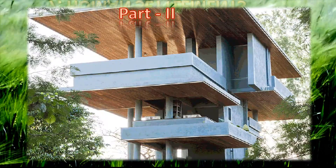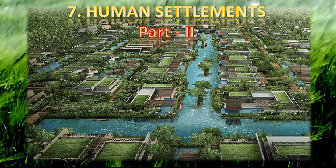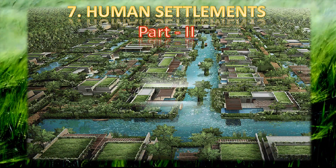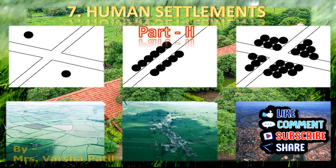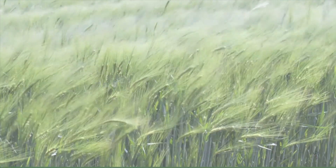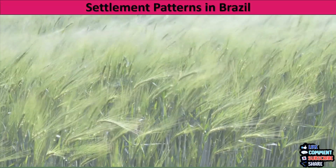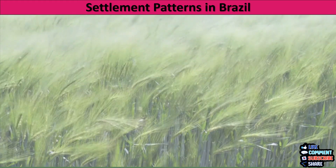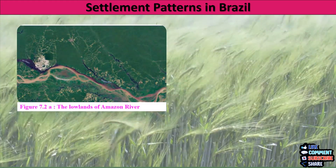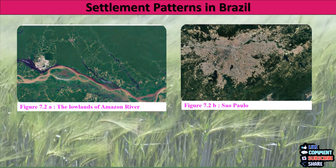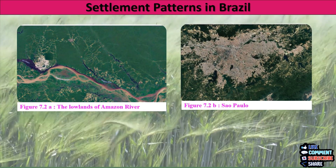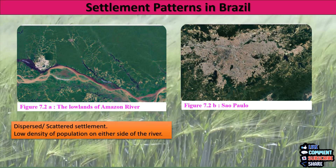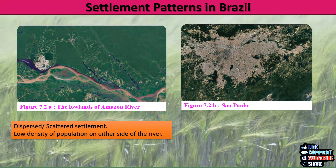Welcome back children to part 2 of chapter 7, Human Settlements. Today we will study the settlement patterns in Brazil. On page number 47 of our textbook, in figure 7.2a and b, we can see images of two settlement patterns in Brazil — one from the Amazon River Basin and the second from the coastal area.